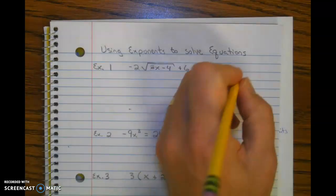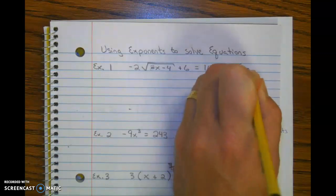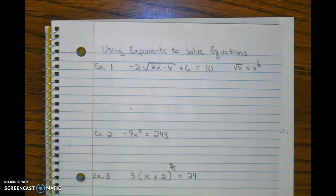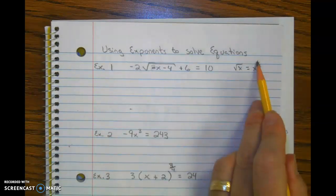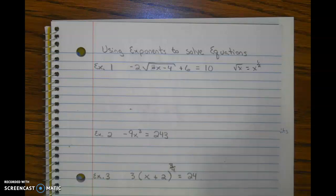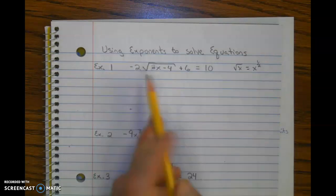Recall that the square root of x is equal to x to the one-half power, where the top number represents the power on the radicand, and the 2 represents the root, or the index. So keep that in mind as we solve this equation.